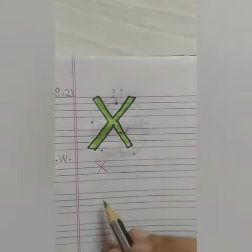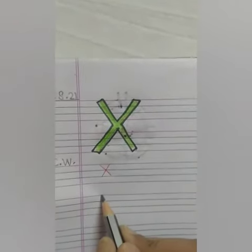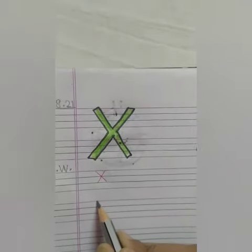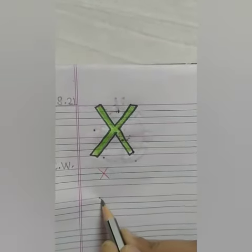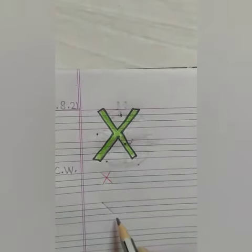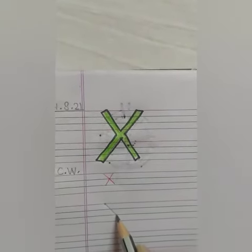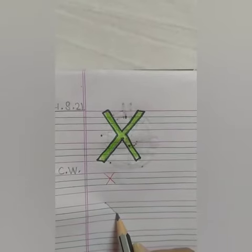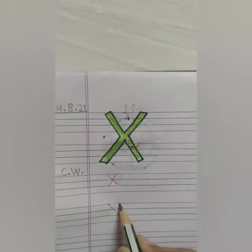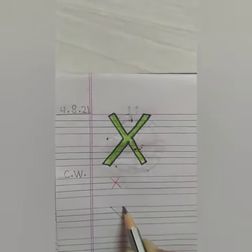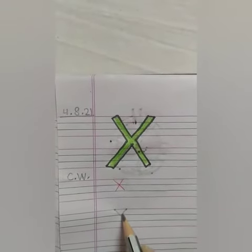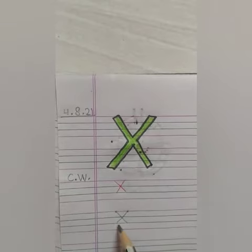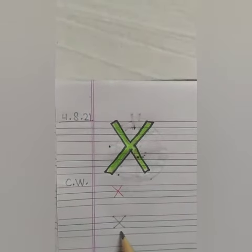Let's start. First we will put a single dot, then make a slanting line left to right and touch it to the lower blue line. Again we will make a slanting line right to left. This is X.